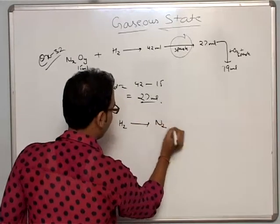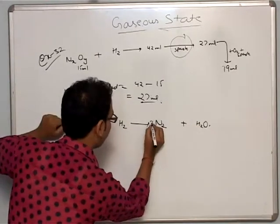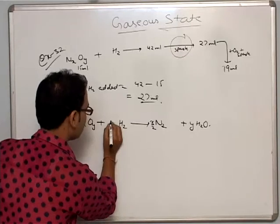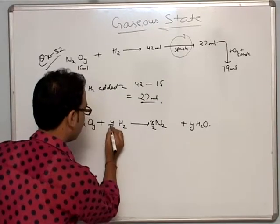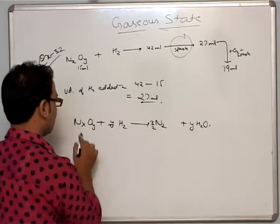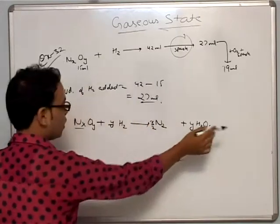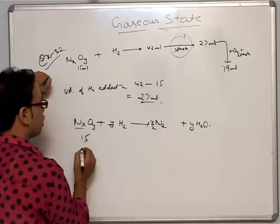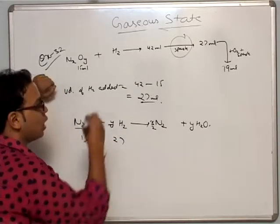After 27 ml hydrogen was added, a spark was applied. The reaction is: NxOy + YH2 gives x/2 N2 + Y H2O. Now, we have 15 ml of nitrogen oxide and 27 ml of hydrogen before the spark.